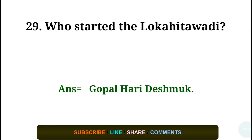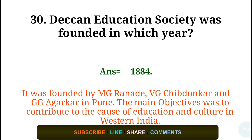Question number twenty-nine: Who started the Lokahitawadi? Answer: Gopal Hari Deshmukh. Question number thirty: The Deccan Education Society was founded in which year? Answer: In the year 1884. It was founded by M.G. Ranade, V.G. Chiplunkar, and G.G. Agarkar in Pune. The main objective was to contribute to the cause of education and culture in Western India.